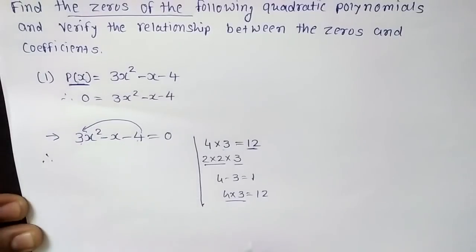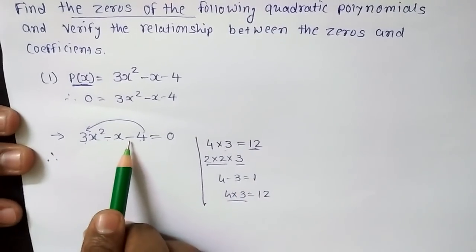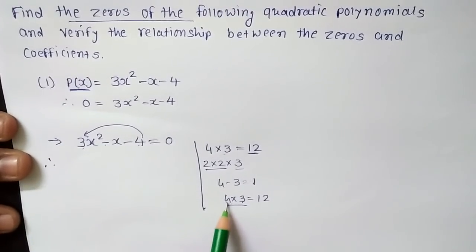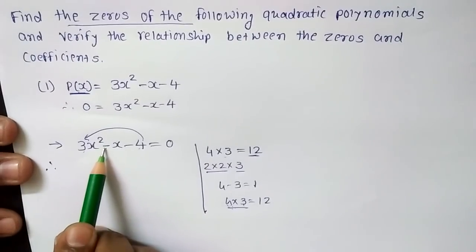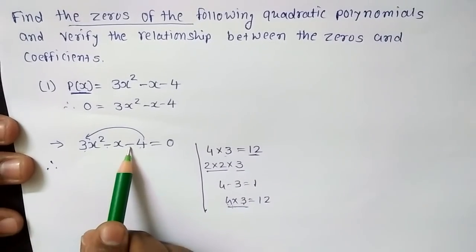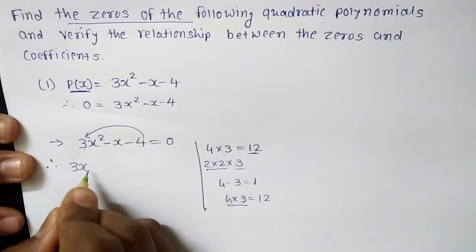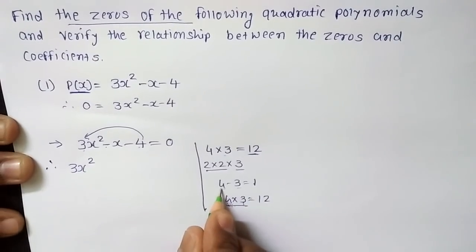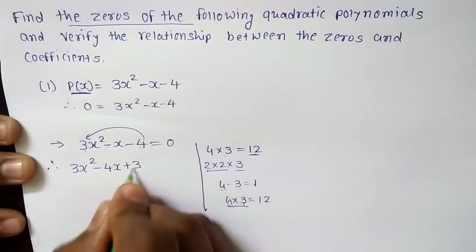Now observe the sign. Since we need to follow subtraction, both factors will have different signs, and the greater term will carry the sign indicated — which is minus. So the greater term, 4, gets the minus sign, giving us -4x + 3x. Writing it out: 3x² - 4x + 3x - 4 = 0.